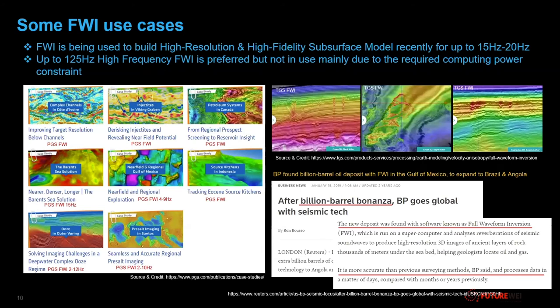In the last several years, FWI is becoming a popular tool used by big oil and gas players to reconstruct high-resolution seismic velocity models and images. For example, the bigger players in oil and gas exploration include PGS, TGS, and BP. In 2016, a news report stated that BP found a new oil deposit of one billion barrels in the subsurface, eight kilometers deep under the sea surface in the Gulf of Mexico, by using their newly developed FWI software. BP claimed that this FWI software delivers much higher resolution images than the previous conventional one, and it also runs much faster, reducing processing time from months or even years to a few days.